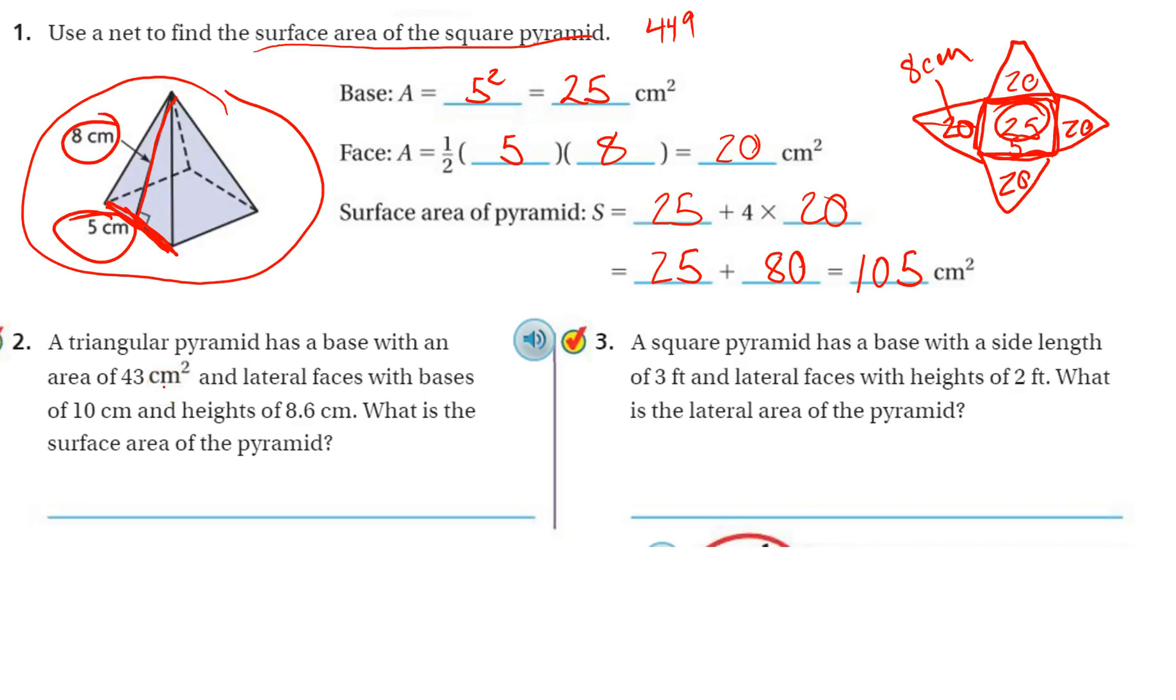Okay, next up, a triangular pyramid. So it's a triangular base, and then it's got triangles coming off of it. It has a base with an area of 43. So the area of the base is 43. And lateral faces with base of 10. So this is 10. And height of 8.6. So the height is 8.6. What is the surface area? Well, we already know the area of the base, 43.